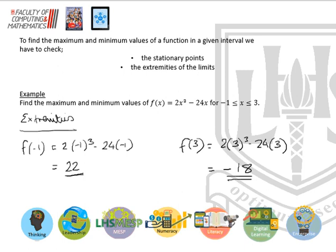So the y values at each end of the extremity, at minus 1 is 22, and at 3 is minus 18. Now we need to check the stationary points.